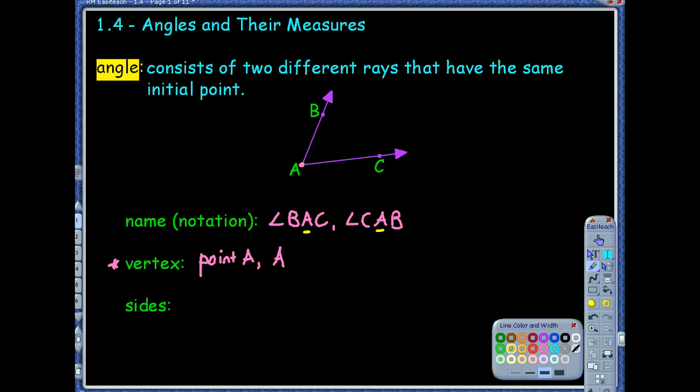Now in this case, because there's only two rays coming off of that one initial point, I could call this angle A as well.